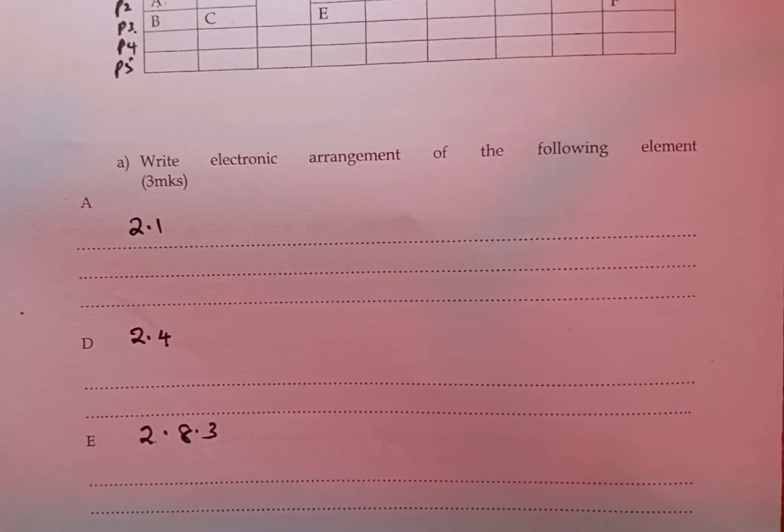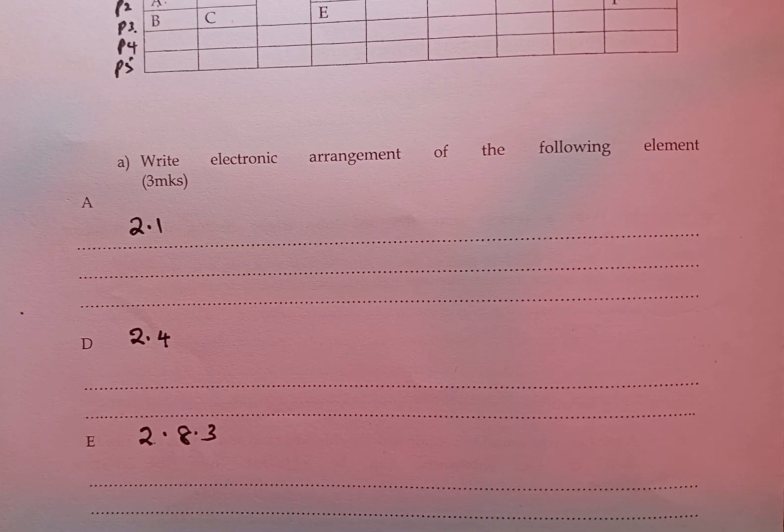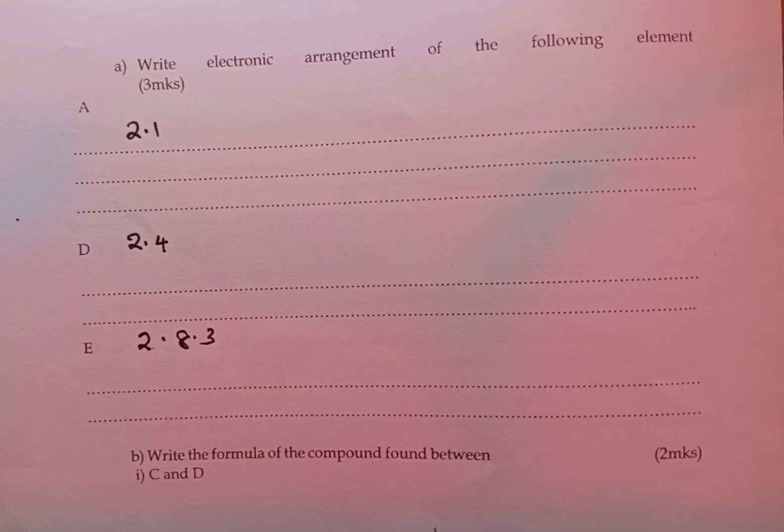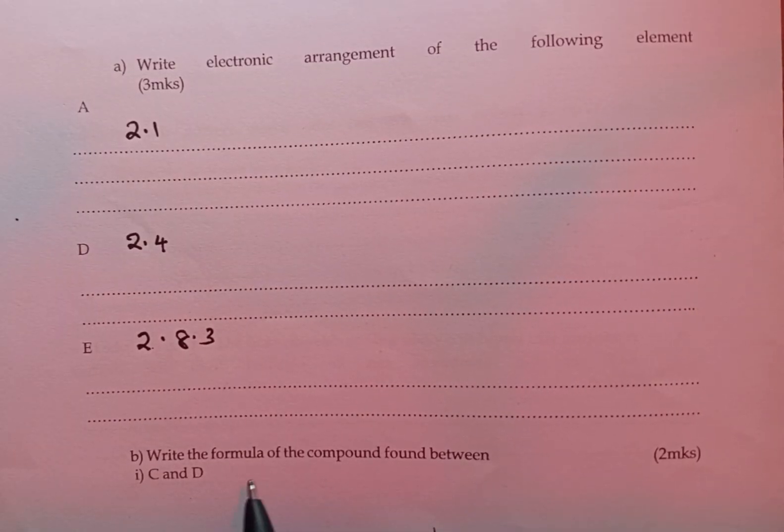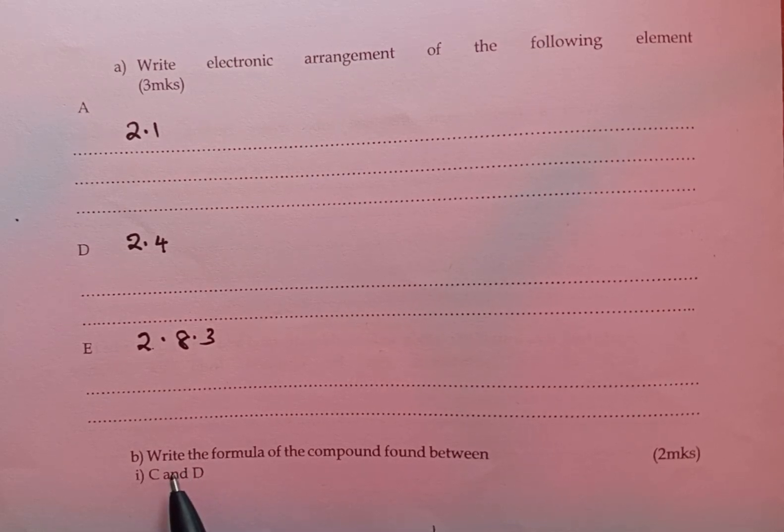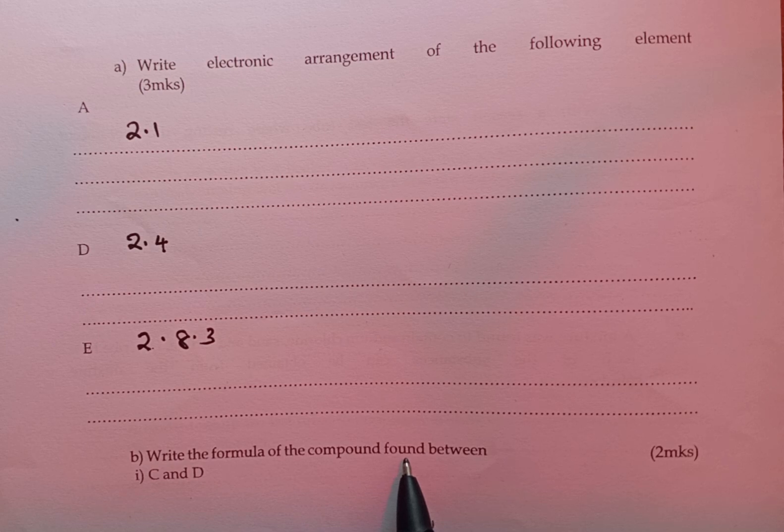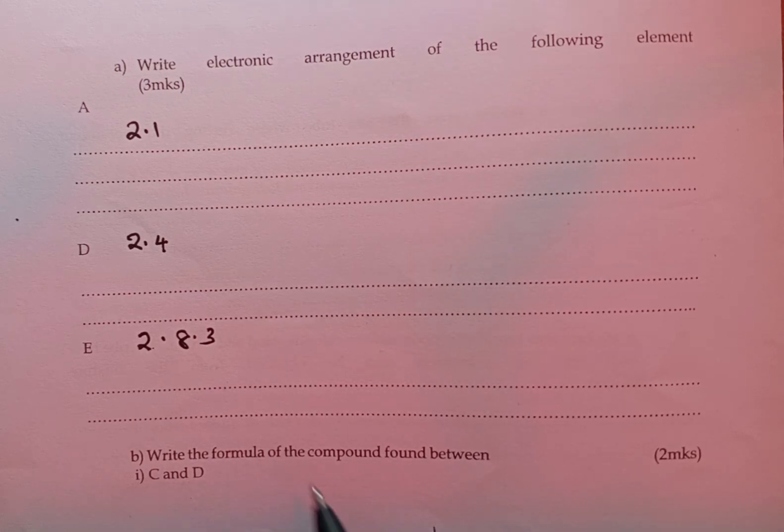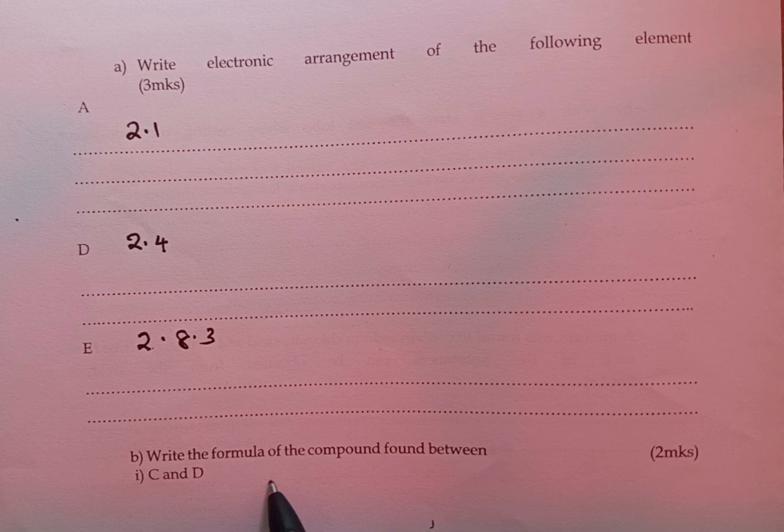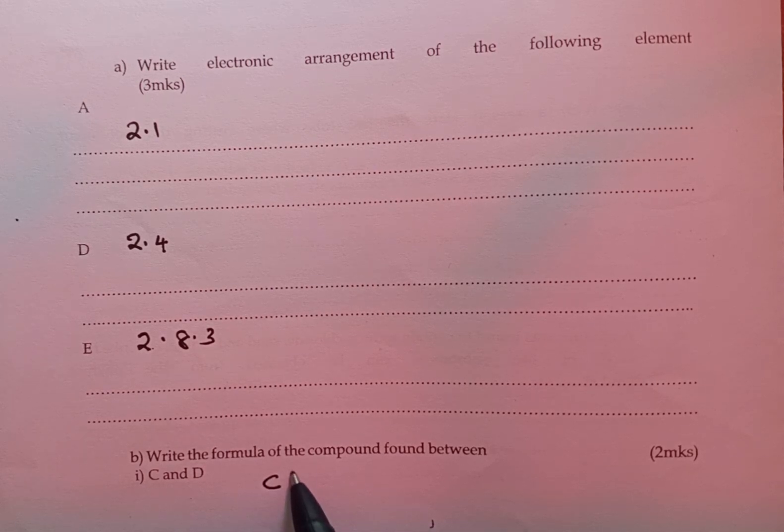Now we move to other questions. Part B of the question, we are told to write the formula of the compound formed between elements C and D. So the formula of the compound is going to be C, D. But for us to have the correct formula, we need to look at the valences of C.